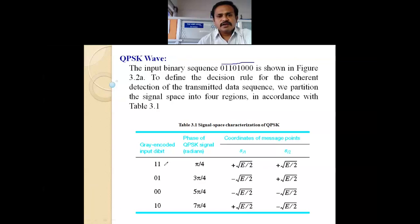The four regions correspond to Gray-coded input d-bit combinations: 1,1 and 0,1 and 0,0 and 1,0. The phase of the QPSK signal for each combination is: for input d-bit 1,1 the phase is π/4; for 0,1 the phase is 3π/4; for 0,0 the phase is 5π/4; and for 1,0 the phase is 7π/4.